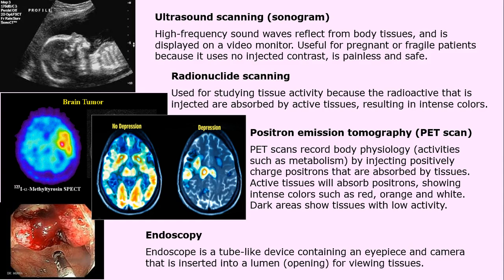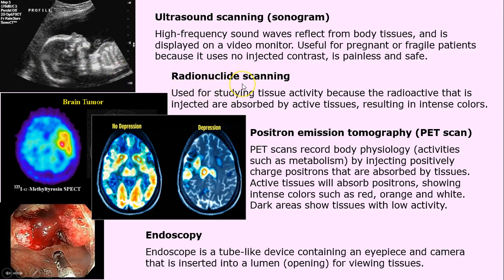Ultrasound, which produces a sonogram, uses high-frequency sound waves. It's ideal for someone who is pregnant or very fragile, when you don't want to inject dyes or subject them to rigorous testing. A wand is dragged across the surface of the body to produce images — in this case, a fetal face. Pretty safe and cool.